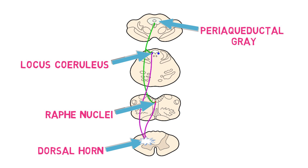Thus, when neurons in the periaqueductal gray are activated, they activate brain stem regions that then inhibit pain transmission in the spinal cord, although it should be noted that recent research suggests this circuit might be involved in the facilitation of pain as well.